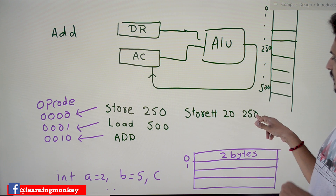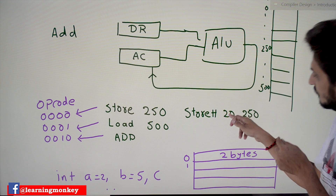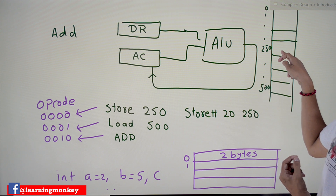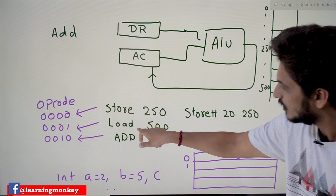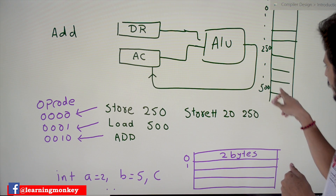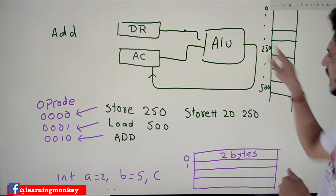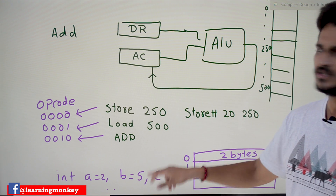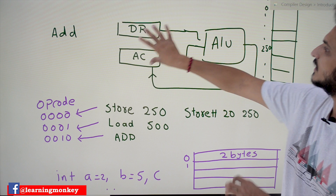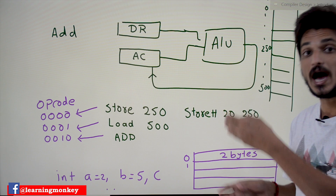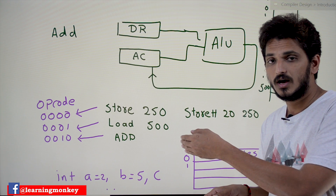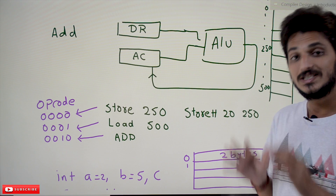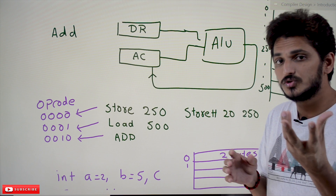The instruction 'store #20, 250': the binary value of 20 should be placed in memory location 250. The instruction 'load 500': whatever is at location 500, get it into the accumulator. And the 'add' instruction: whatever is in the data register and accumulator, those two go into the ALU. This is the processor we designed in computer architecture.